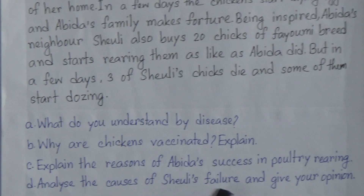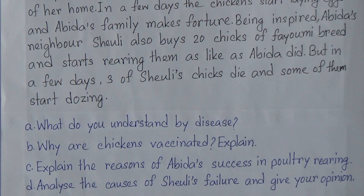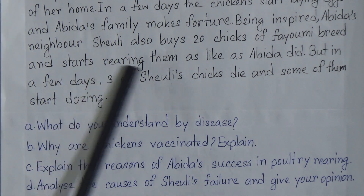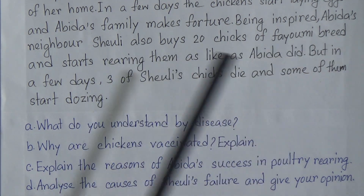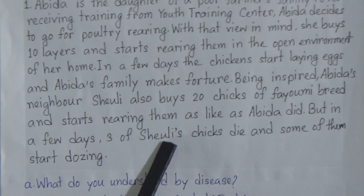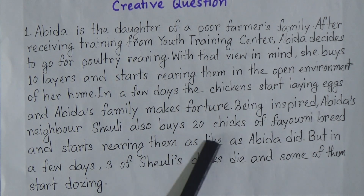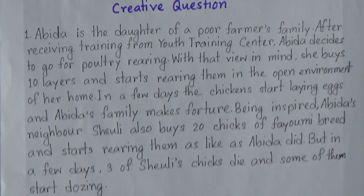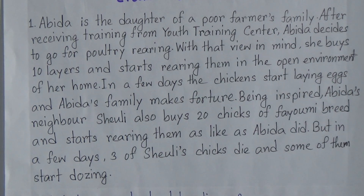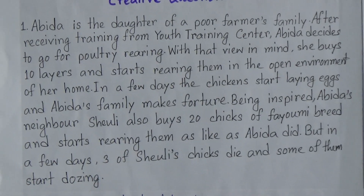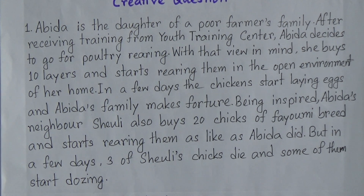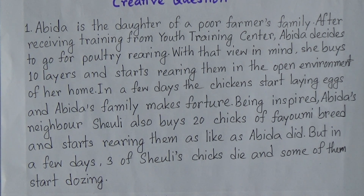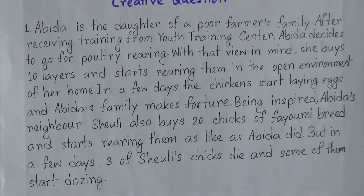Question number D: analyze the causes of Shirley's failure and give your opinion. We will identify the causes of Shirley's failure and also give our opinion. Looking at the stem, Shirley bought 20 chicks of Fiomi breed. Abhida bought local layers, but Shirley bought Fiomi breed, which needs special care. However, Shirley tried to rear them using the open or free process. As a result, these chicks could not collect food, they fell sick, three of the chicks died, and some started dozing.